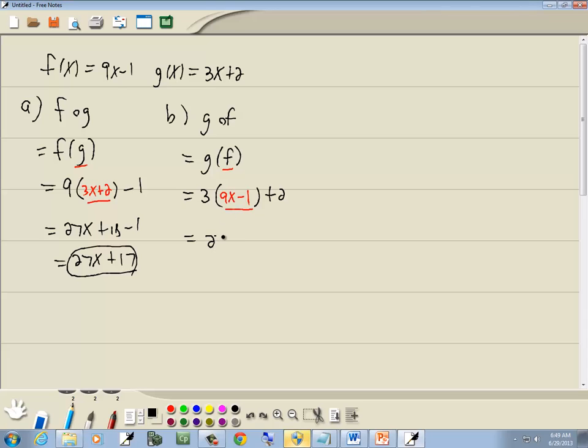Well, 3 times 9x is 27x. 3 times negative 1 is negative 3 plus 2, which gives us 27x minus 1.